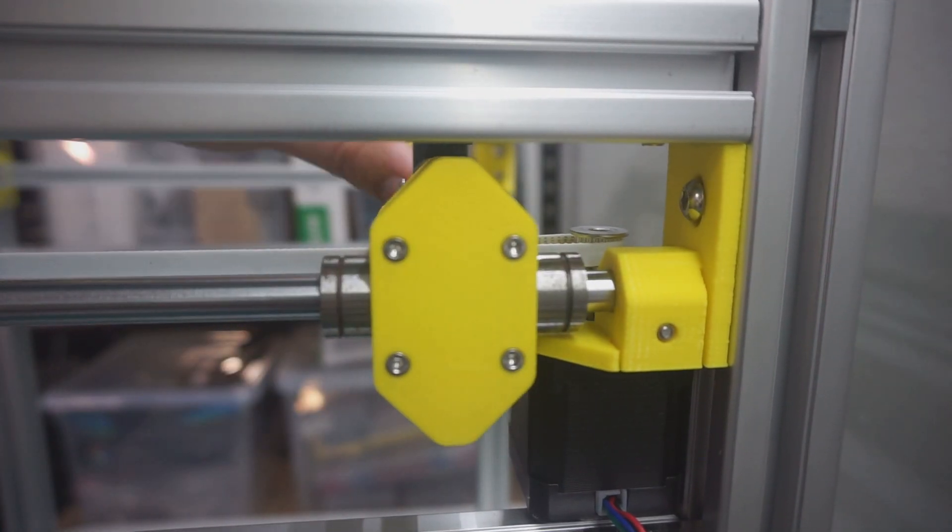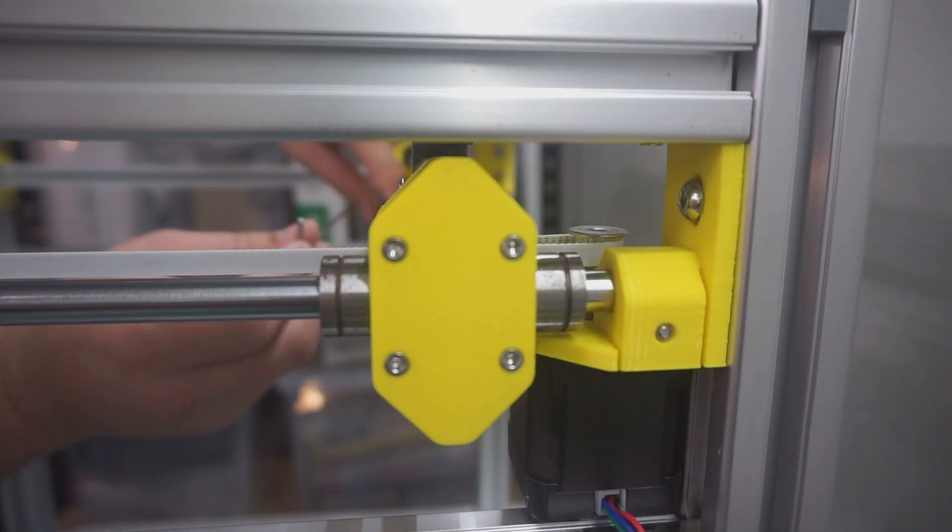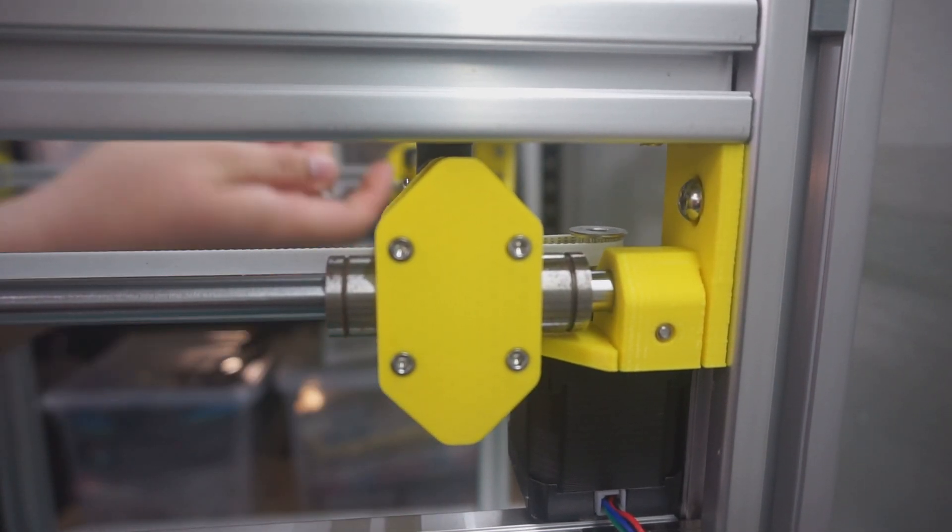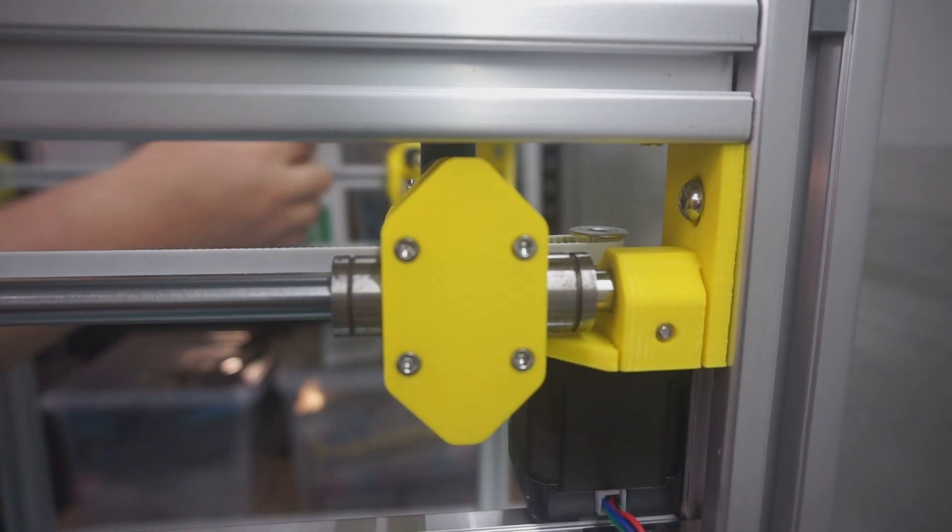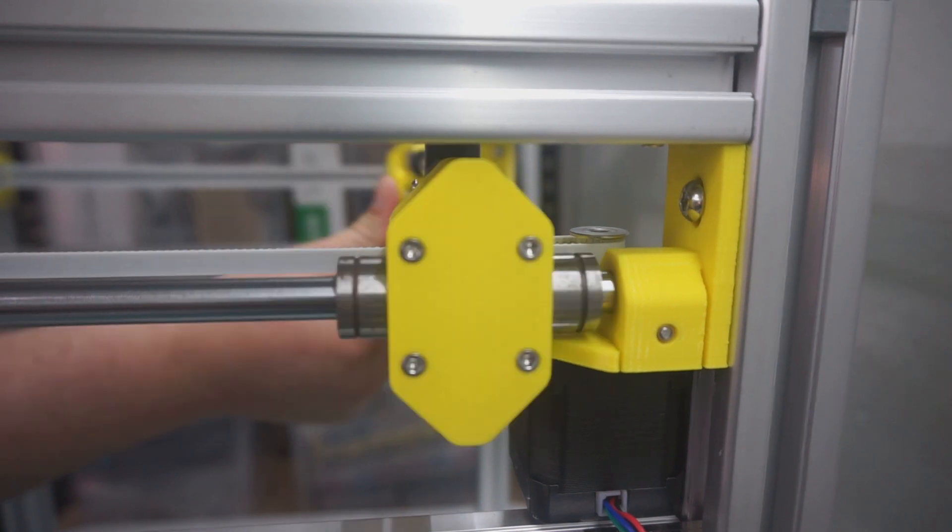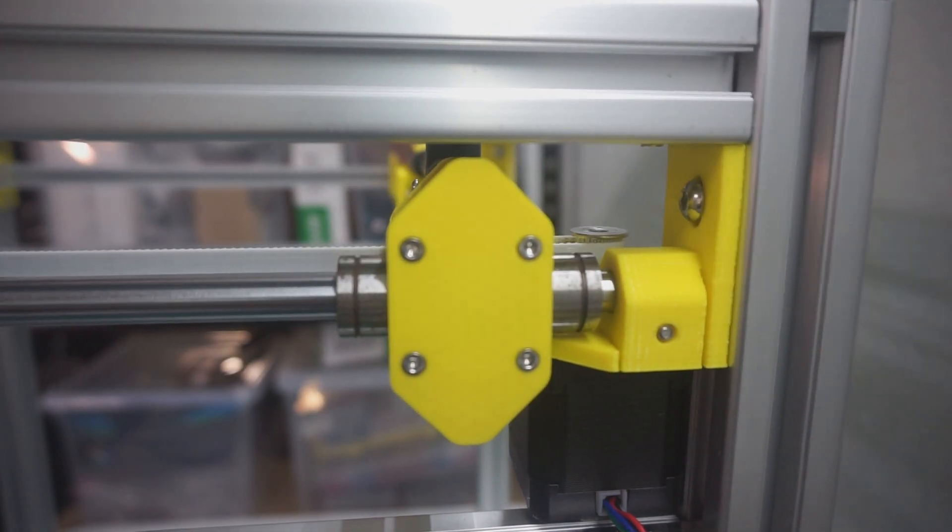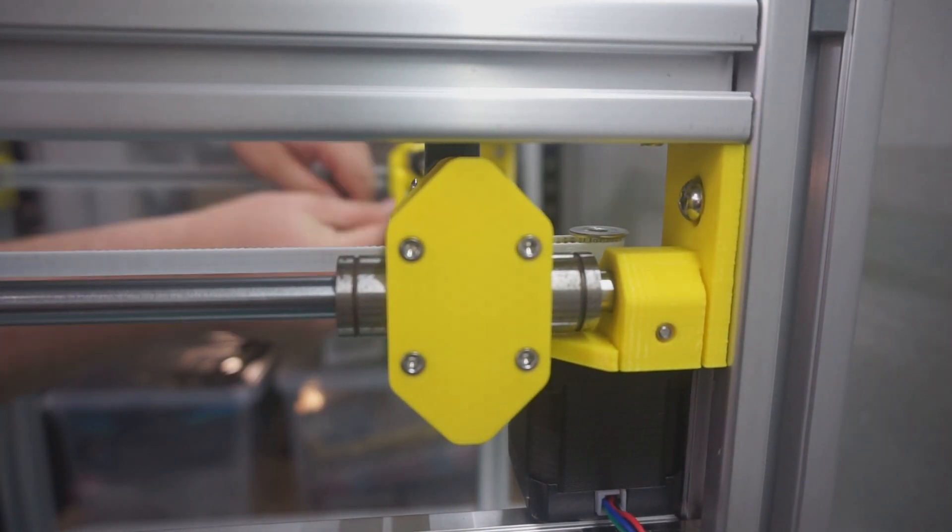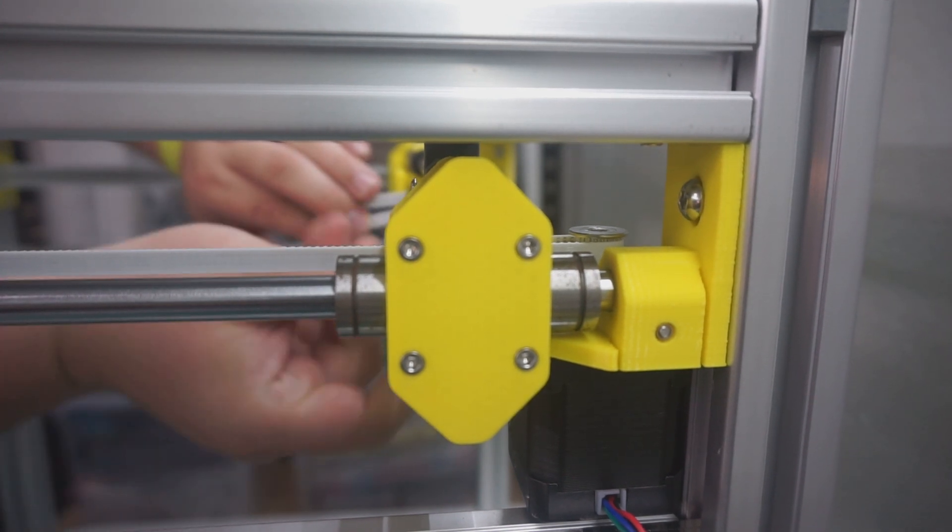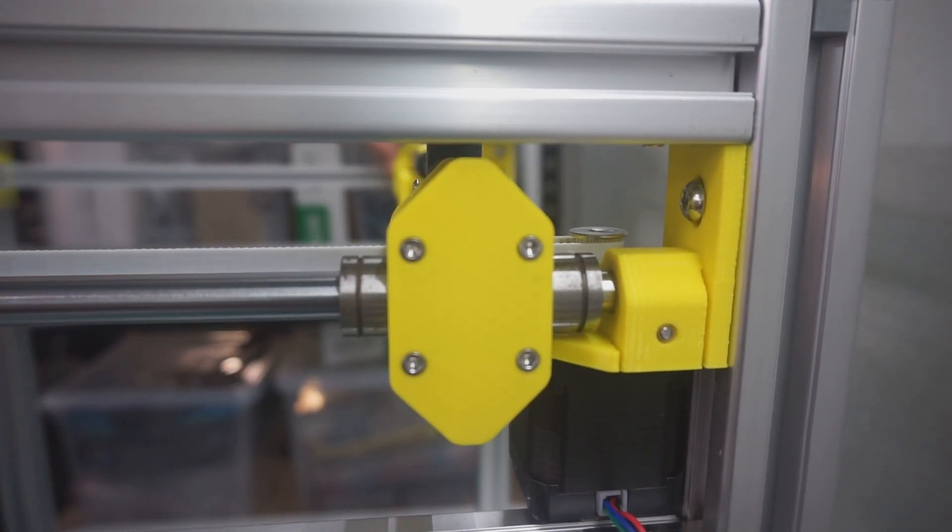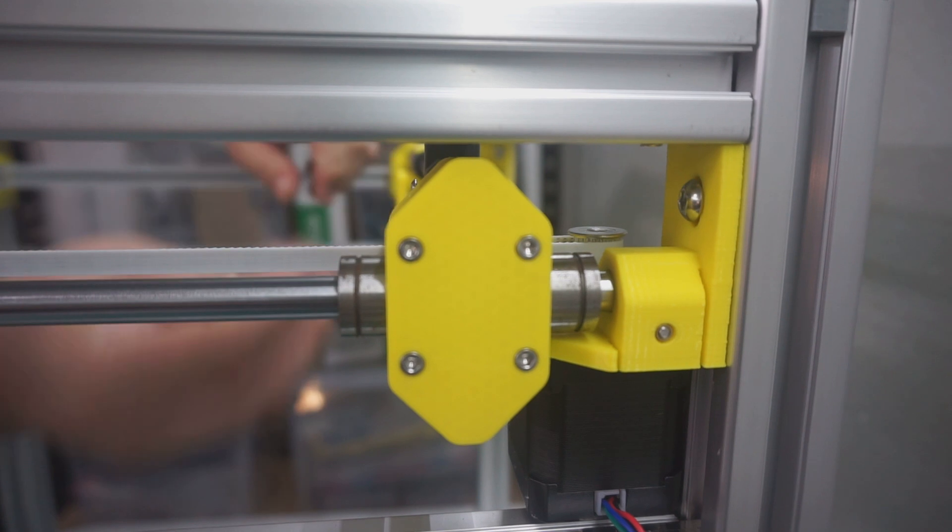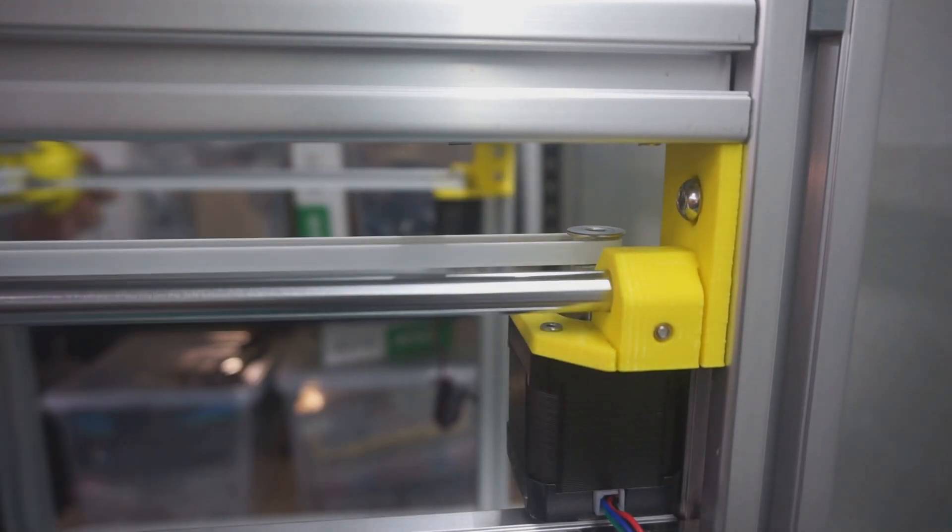Then we want to push the X gantry up against the stepper motors. As you can see mine is not quite square. So what we want to do is tighten the four screws on the X gantry so that we square up the X axis on the frame. Once we get it nice and square you want to make sure that the X gantry is square at the other end.